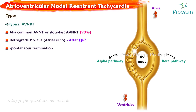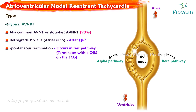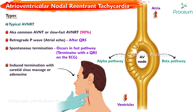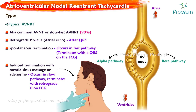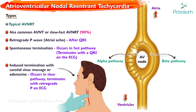Spontaneous termination of typical AVNRT often occurs in the fast pathway, terminating with a QRS on the ECG. Induced termination with carotid sinus massage or adenosine results in termination in the slow pathway, terminating with a retrograde P-wave on ECG.